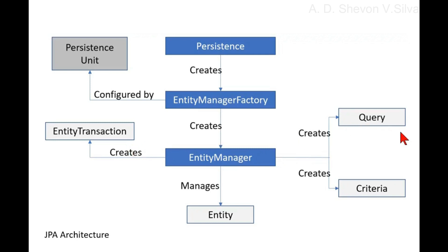Query is an interface used to control query execution. The entity manager object helps in creating a query object, and the implementation depends on the persistence provider. The Criteria API supports building SQL queries using Java objects. With the JPA Criteria API, it is possible to have type-safe queries that can be checked at compile time.